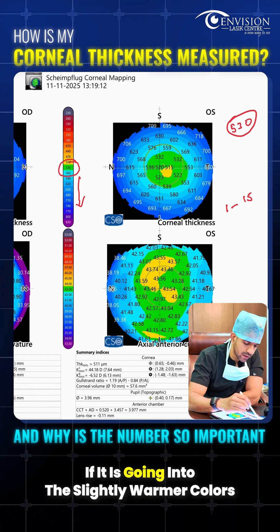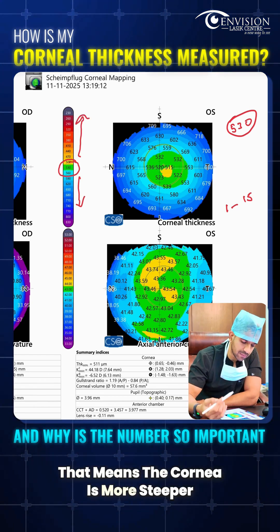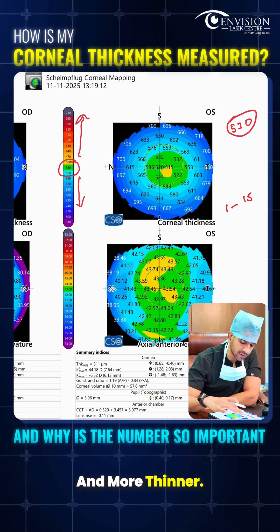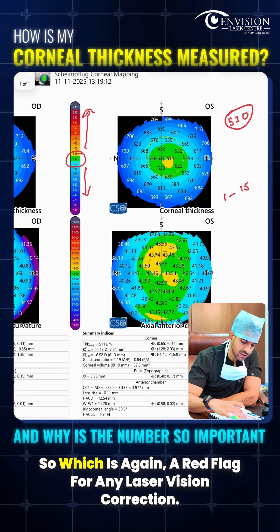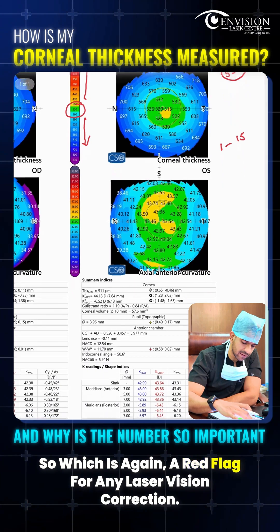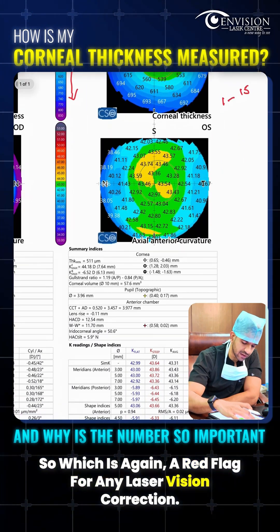As the colors shift toward warmer tones, that means the cornea is steeper and thinner, which is a red flag for any laser vision correction.